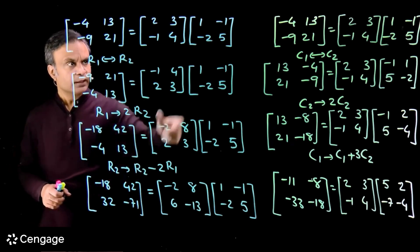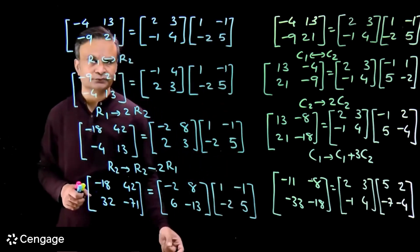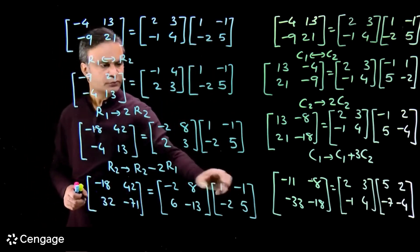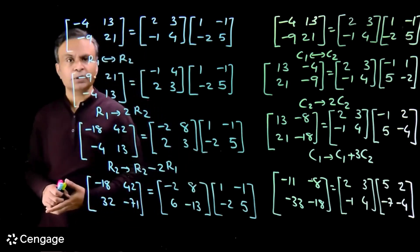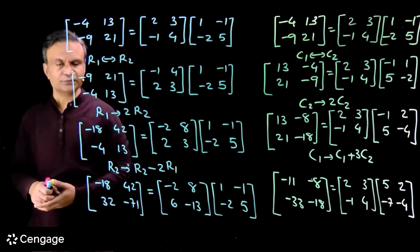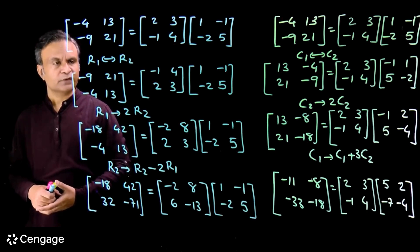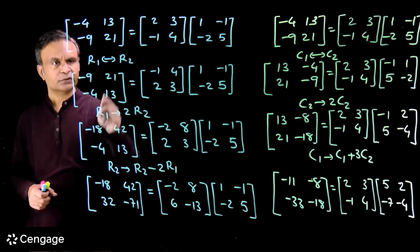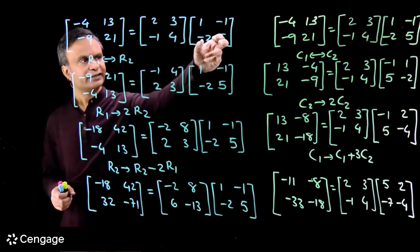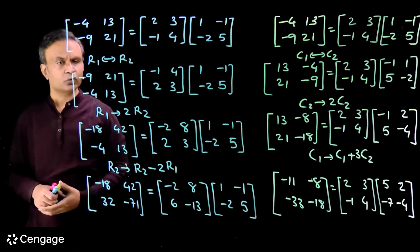Now, what I do — I keep the post-multiplier matrix intact. I don't change this matrix. I am transforming these two matrices simultaneously using some elementary operations. The first elementary operation is interchanging row 1 and row 2. I am keeping this matrix intact, and in these two matrices I am interchanging row 1 and row 2.